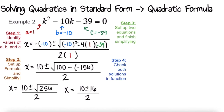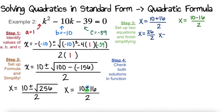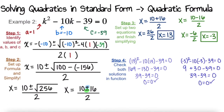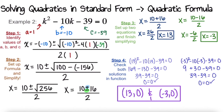Now we set up two equations. One gives the x value when we add 10 and 16, the other when we subtract. Adding: 10 plus 16 is 26, and 26 divided by 2 gives x equals 13. Subtracting: 10 minus 16 is negative 6, and negative 6 divided by 2 gives x equals negative 3. We check both in the original standard form function, and both are solutions. Therefore this quadratic has two real zeros: (13, 0) and (−3, 0).